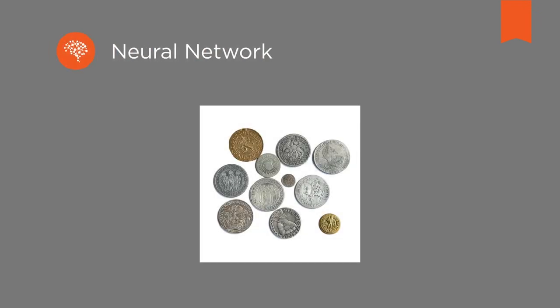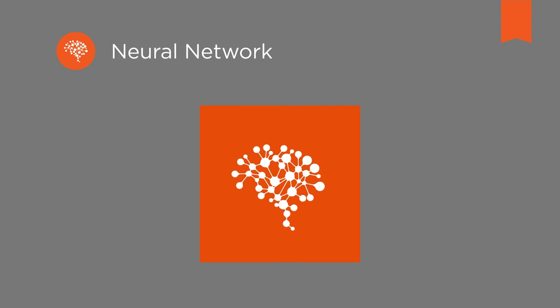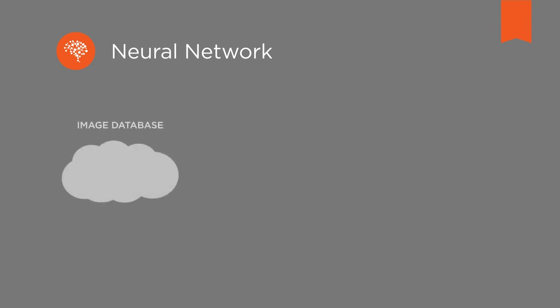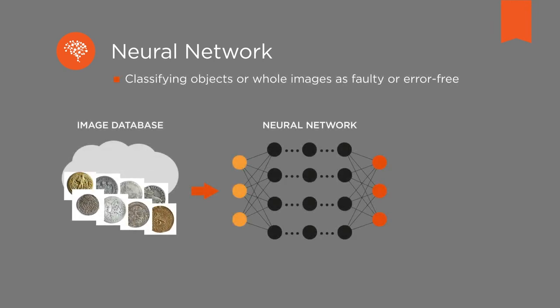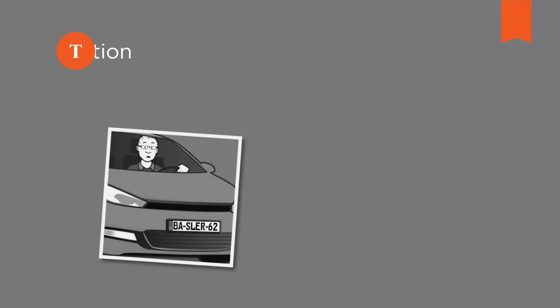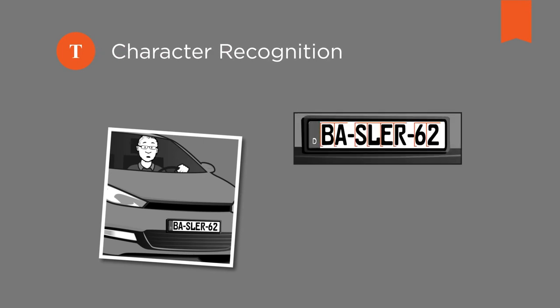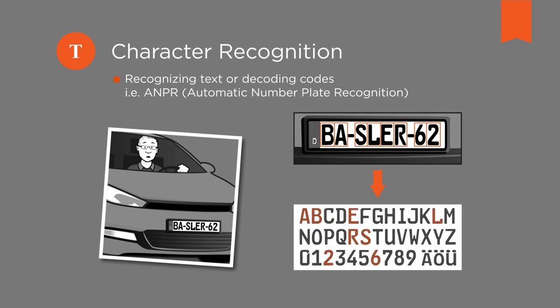Furthermore, neural networks can detect structures on the image. This allows actions such as classifying objects or whole images as faulty or error-free. Often it is also about recognizing text or decoding codes on an image. Image analysis is a demanding task that requires the highest speed and accuracy and thus very efficient software architectures.